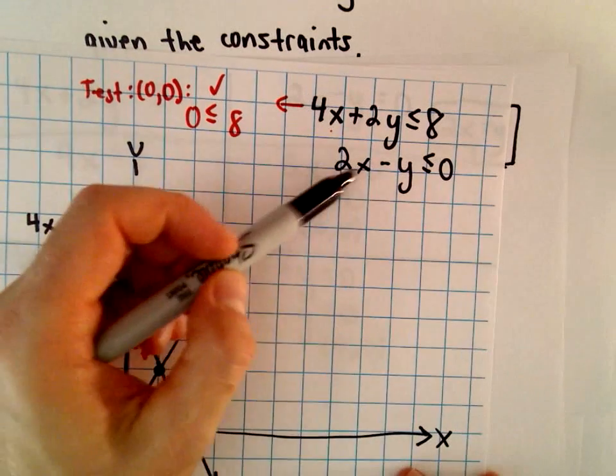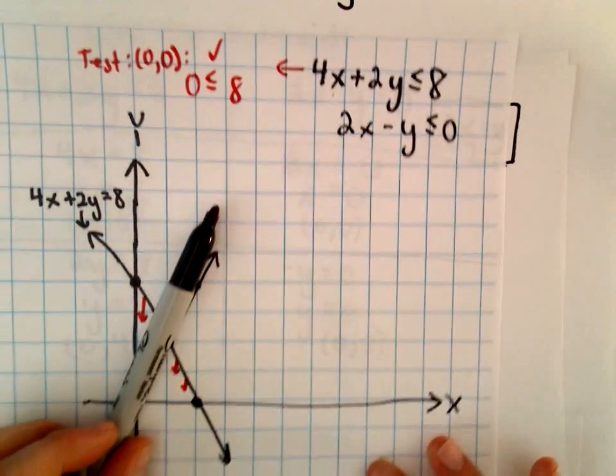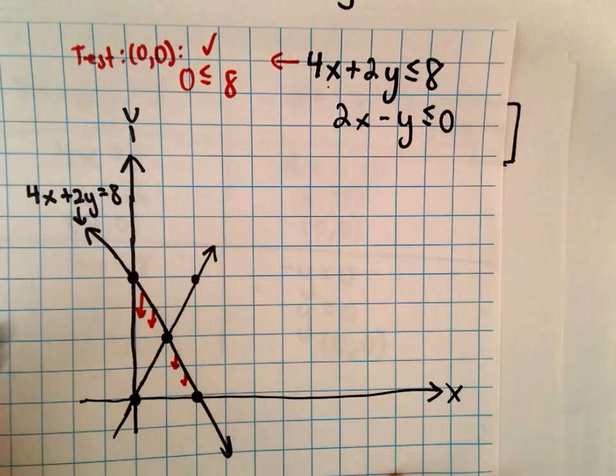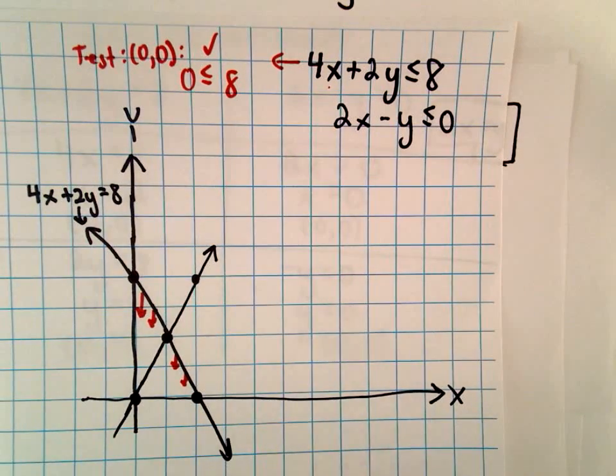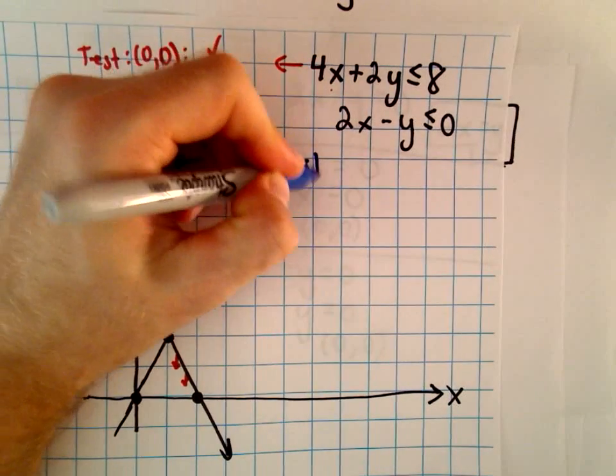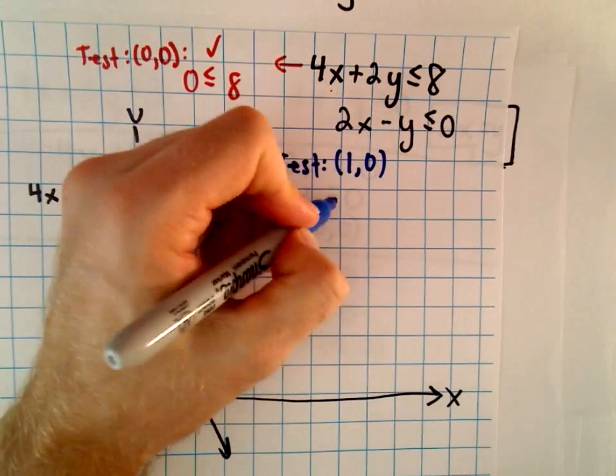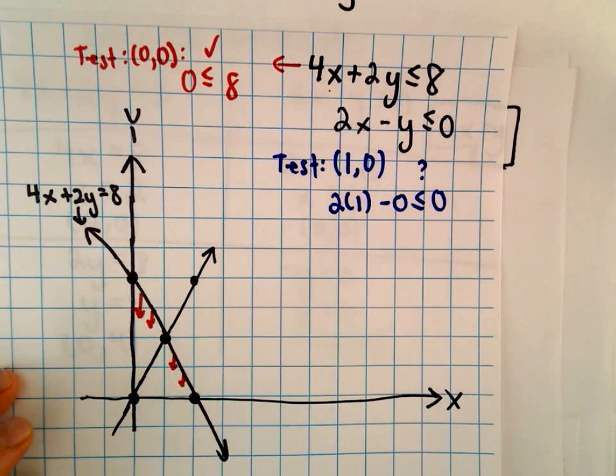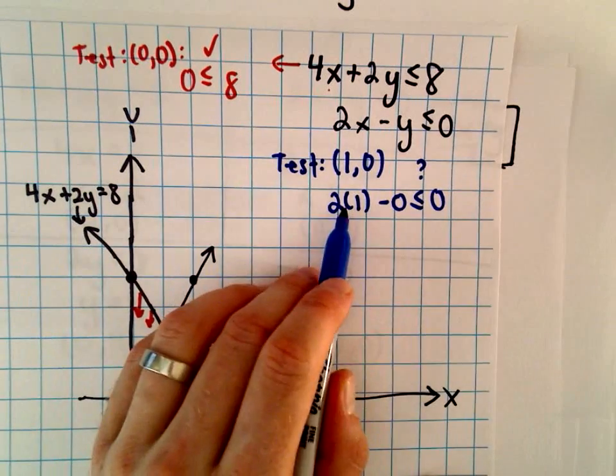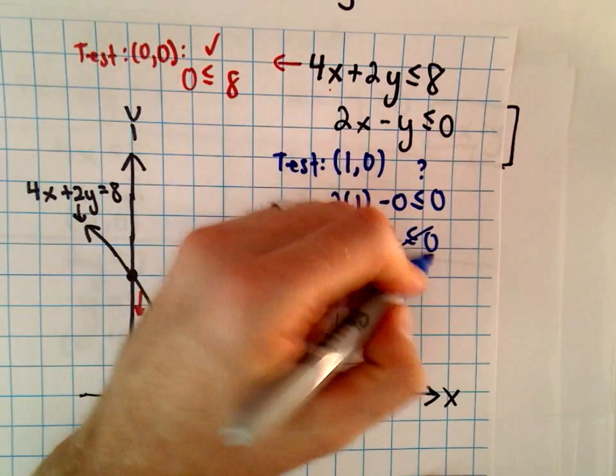For the second one, 2x minus y less than or equal to 0, well now we can't use the test point 0, 0. So we have to use some other point. I don't know, how about the point 1, 0? So I'm going to test the point 1, 0. So if we plug 1 in for x and 0 in for y, I have to ask myself, does that satisfy our inequality? Well, we have to say, is 2 less than or equal to 0? Certainly not.